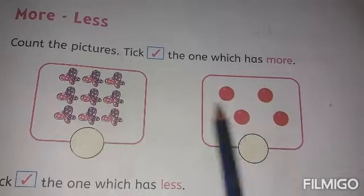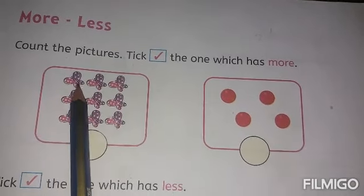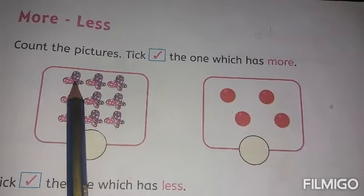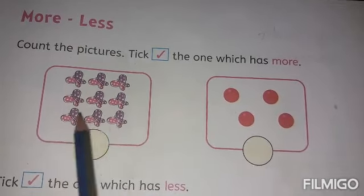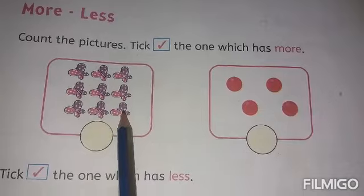Tick the one which has more. Let us first count the pictures. How many butterflies are here? 1, 2, 3, 4, 5, 6, 7, 8, 9. 9 butterflies.